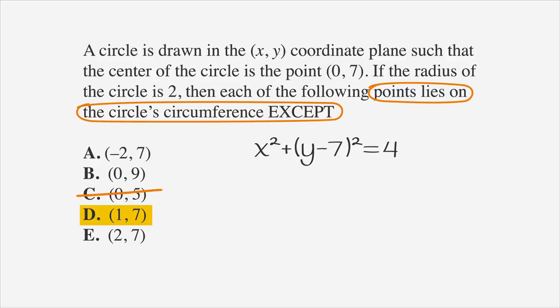Let's try D next, which is 1,7. Our equation is 1 squared plus 7 minus 7 squared, or 1 squared. As 1 doesn't equal 4, that point isn't on our circle, so D is our answer.